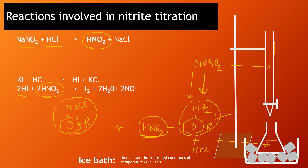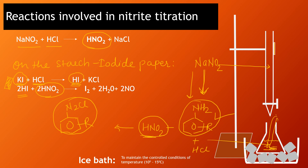The HI comes from the KI present on the starch iodide paper. These reactions happen on the starch iodide paper when a drop is placed using the glass rod. On the paper there is KI, and in the analyte solution there is HCl, so KI and HCl react to form HI. The excess HNO2 then reacts with the HI and iodine is liberated. This iodine reacts with the starch on the paper, turning the paper blue — and that is the end point of the reaction.